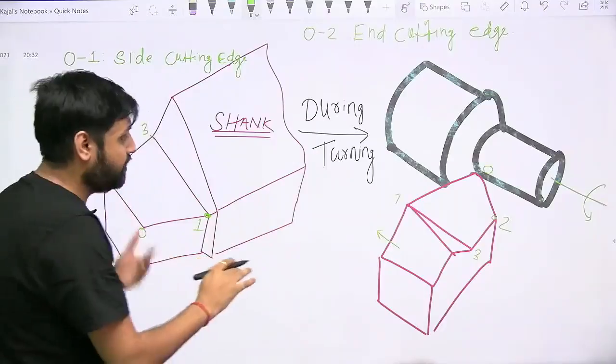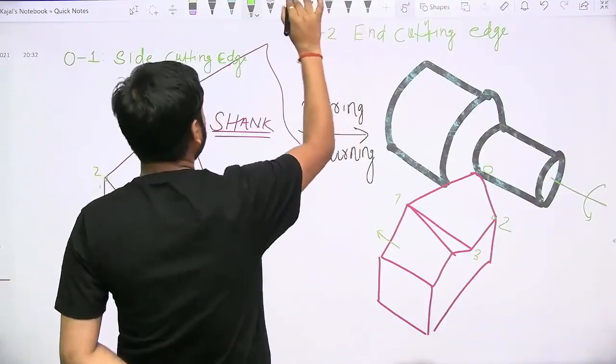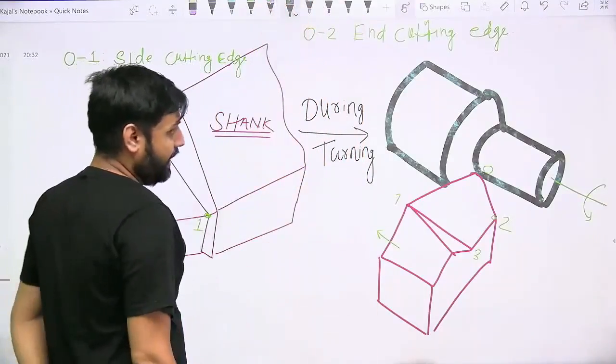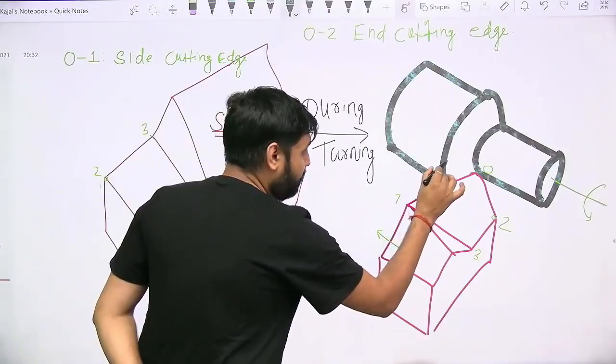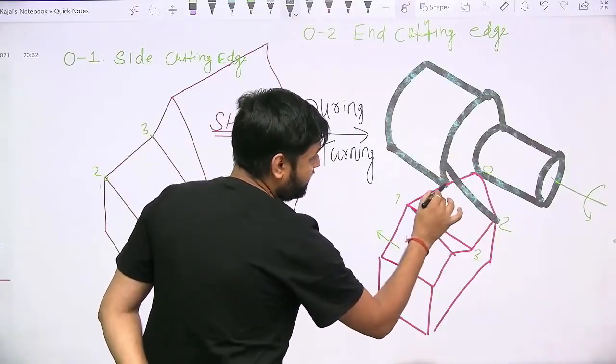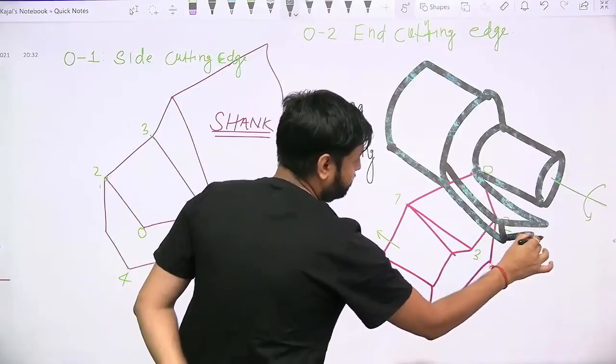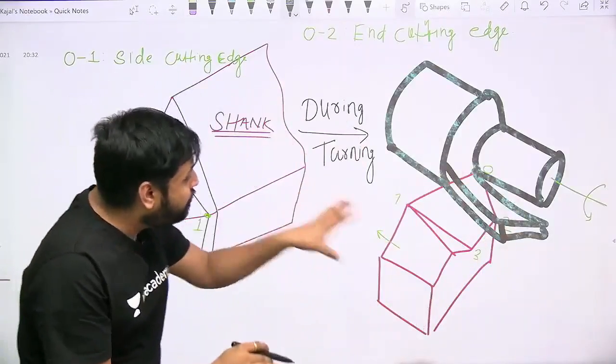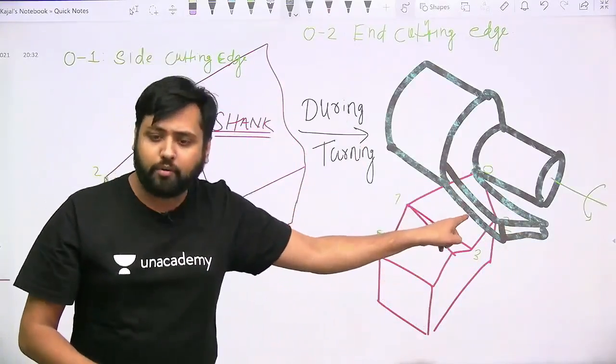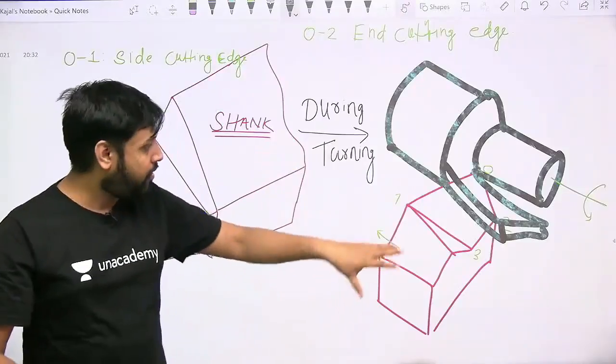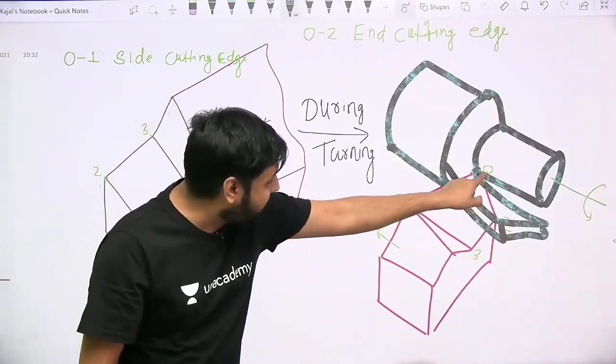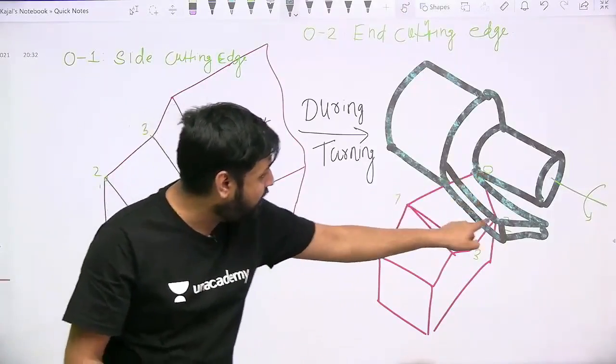Now listen carefully. As machining starts, you know that chips will form, and the chips will come out in this direction and will flow onto a surface of the tool.